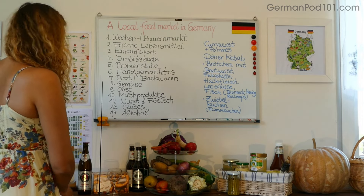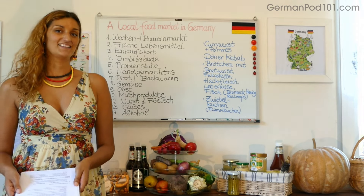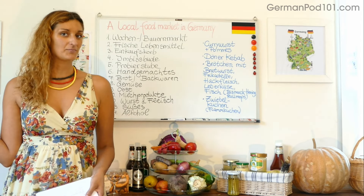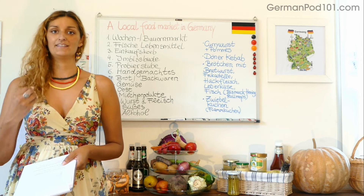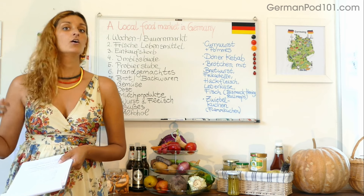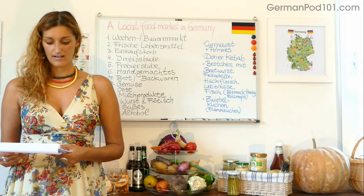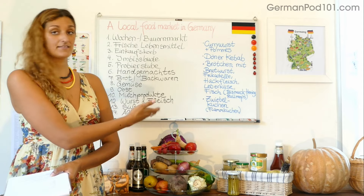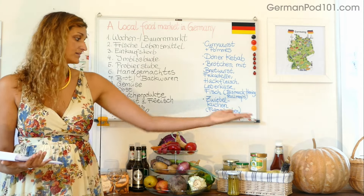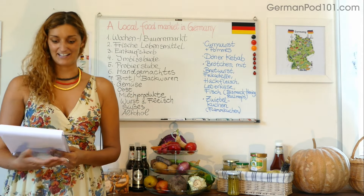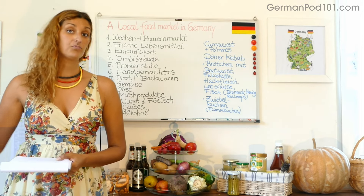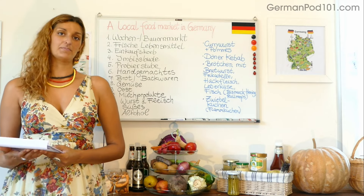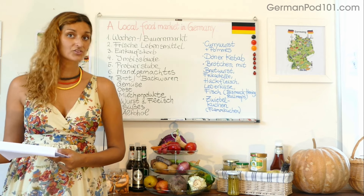Ich habe mir gedacht, ich mache ein kleines Quiz mit euch. Kommen wir also zu meinen Quizfragen. Meine erste Quizfrage ist: Wie funktioniert denn so ein deutscher Wochenmarkt überhaupt? Wie das Wort schon sagt, Wochenmarkt bedeutet, dieser Markt findet meistens regelmäßig wöchentlich statt. Vorwiegend werden dort frische Lebensmittel und Nahrungsmittel verkauft — frische Lebensmittel sind vor allem Obst, Gemüse, aber auch andere Frischwaren wie Wurst. Oft gibt es auch Pflanzen oder Blumen zu kaufen, und pro Markt sollte es mindestens eine Imbissbude geben. So funktioniert ein deutscher Lebensmittelmarkt.